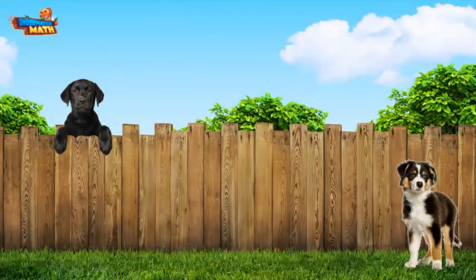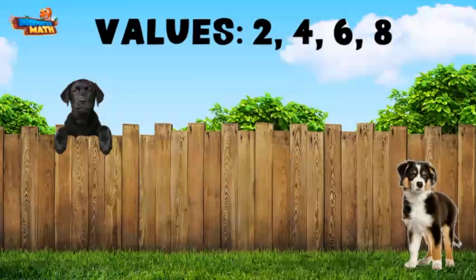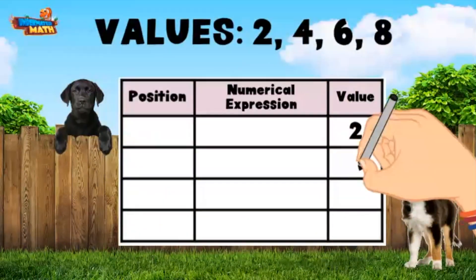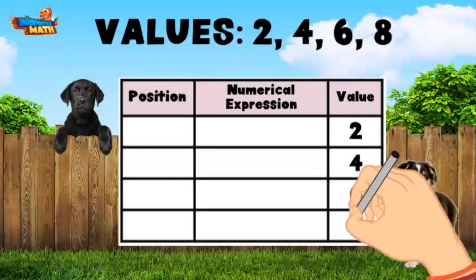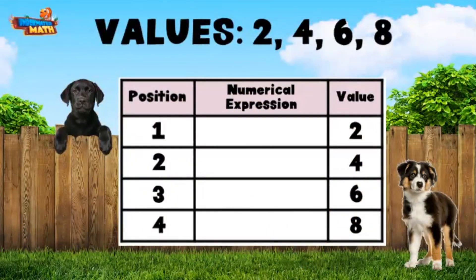Let's try another one. This time we are being given the values of two, four, six, and eight. We can start by putting these numbers in our value column. Next, let's put our positions of one, two, three, and four on the table. Now, how do we get from one to two? We have two options: we can add one, or we can multiply by two. The thing about a rule is that it must work for every position to get the value.